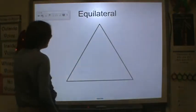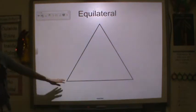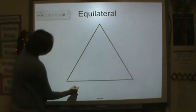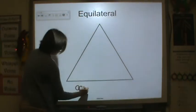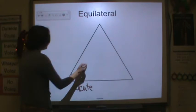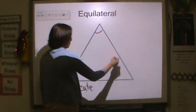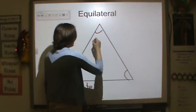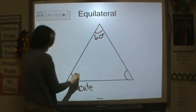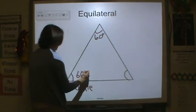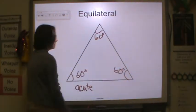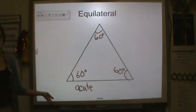Now we have an equilateral triangle. Equilateral triangles will always be acute, because with equilateral triangles the angles are always 60 degrees, and that's all acute.